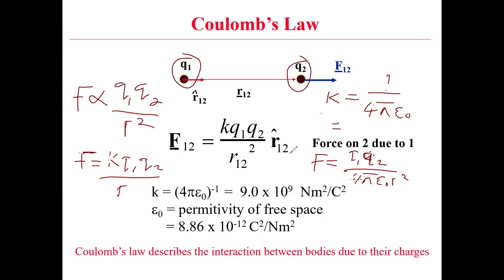The constant k has a standard value of 9.0 times 10 to the power of 9. The permittivity of free space — meaning a space where there is no air, like an isolated medium — has a standard value of 8.86 times 10 to the power of minus 12 coulombs squared per newton meter squared.